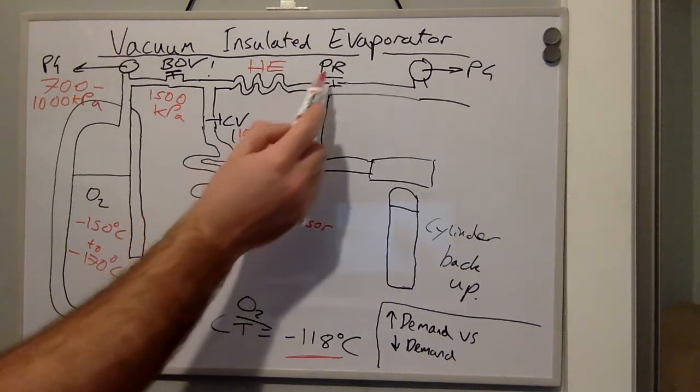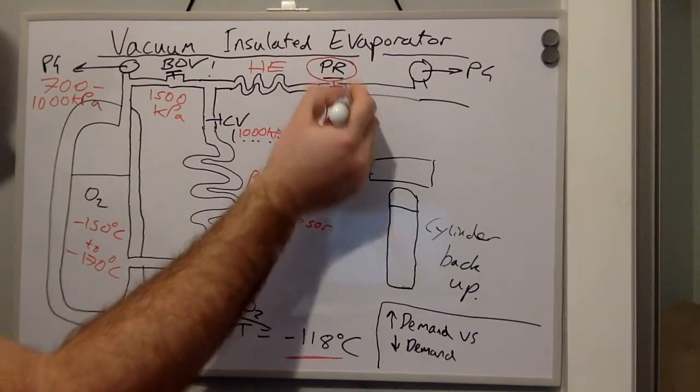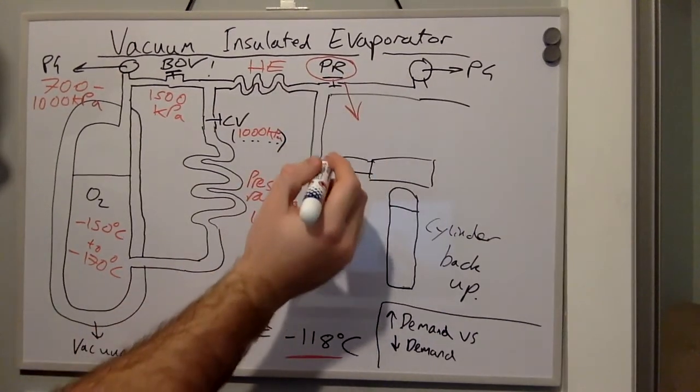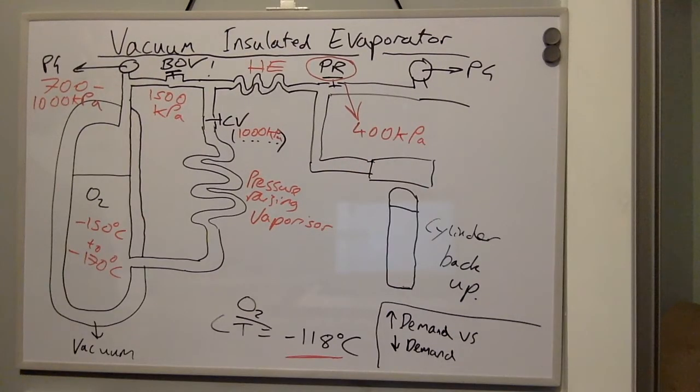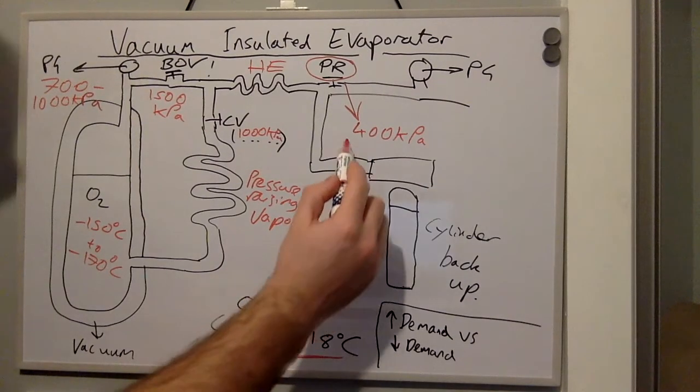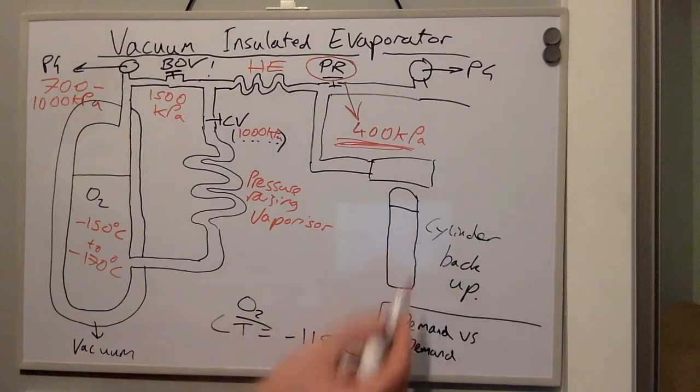We have a pressure regulator here and a pressure regulator here that reduces the pressure of the oxygen to 400 kPa. Therefore, the pipeline pressure of oxygen is at 400 kPa. We also have a cylinder backup here.